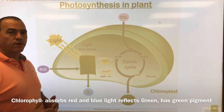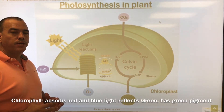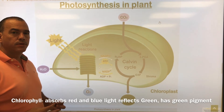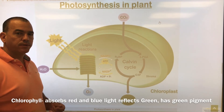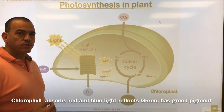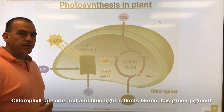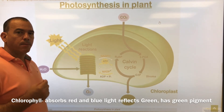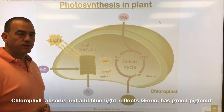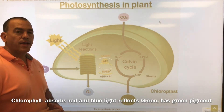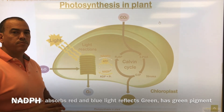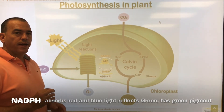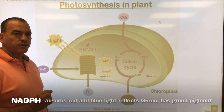The next word is chlorophyll. Chlorophyll is a green pigment. It absorbs red and blue light and reflects green light.